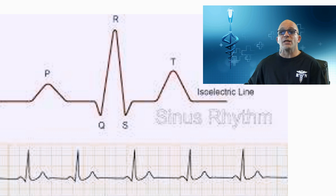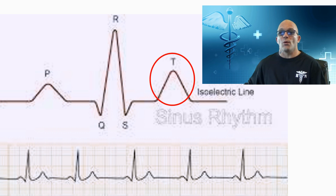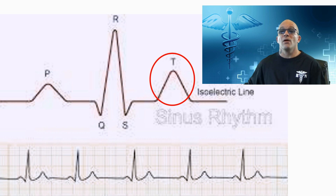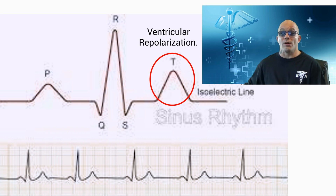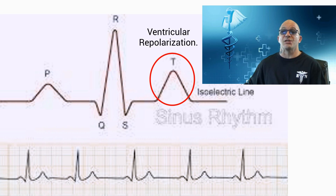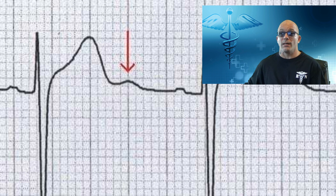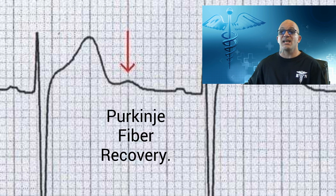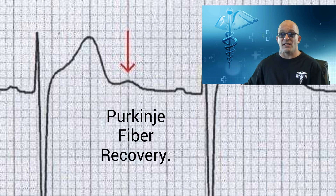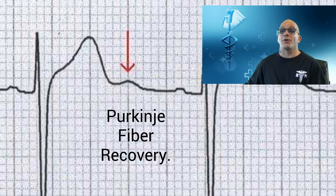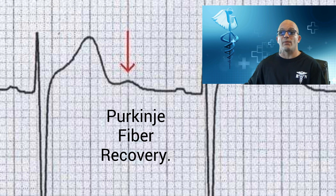Following the QRS is the T wave, which is normally a modest upward waveform that represents ventricular repolarization or relaxation of the ventricles. Sometimes a U wave will be recorded, and this can indicate the recovery phase of the Purkinje conduction fibers.